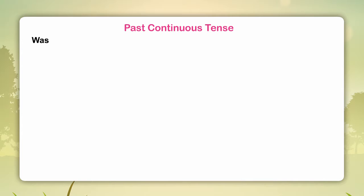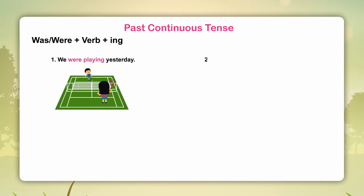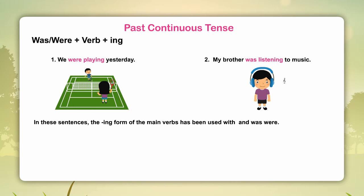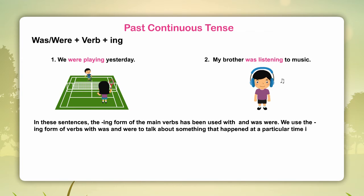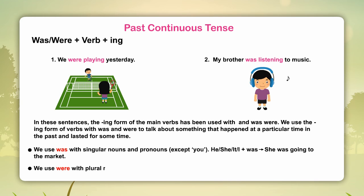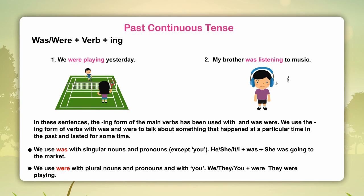Past continuous tense: was/were plus verb plus -ing. Examples: We were playing yesterday. My brother was listening to music. In these sentences, the -ing form of the main verbs has been used with was and were. We use the -ing form of verbs with was and were to talk about something that happened at a particular time in the past and lasted for some time. We use was with singular nouns and pronouns except you — he, she, it, I plus was. Example: She was going to the market. We use were with plural nouns and pronouns, and with you — we, they, you plus were. Example: They were playing.